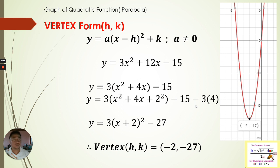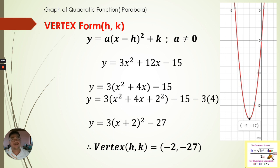We add 4 inside the parentheses, but to keep the equation balanced we must also subtract the equivalent value outside — 3 times 4 equals 12, so we subtract 12. Now x² + 4x + 4 is a perfect square, which we write as (x + 2)².